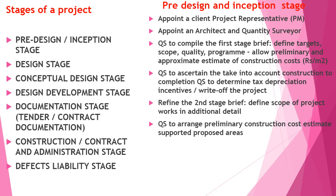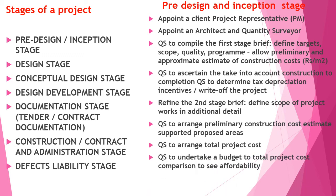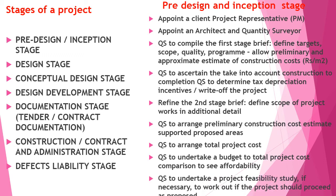The QS has to refine the second stage brief and define the scope of the project work in additional detail. They arrange a preliminary construction cost estimate supported with proposed areas, arrange the total project cost, undertake a budget comparison to assess the affordability of the project, and undertake a project feasibility study if necessary to work out if the project should proceed.